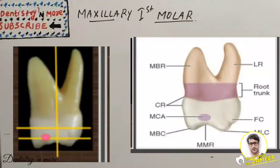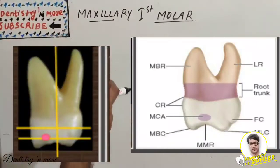The palatal root is longer and narrower than the mesio-buccal root and is banana-shaped. The disto-buccal root is hidden from the mesial aspect. From this aspect you can see the mesio-buccal root, palatal root, and the root trunk.